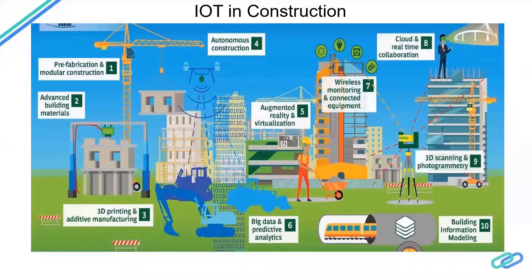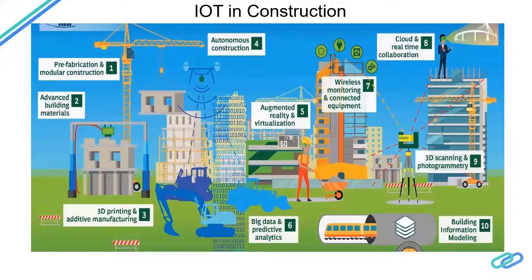Cloud and real-time collaboration is helpful for maintaining a database of various materials and estimation tools, making project information readily available for any activity. Building Information Modeling (BIM) involves 3D modeling of buildings and structures, with estimation tools used to check energy components and structural components — for example, using software like Revit.